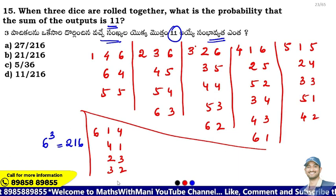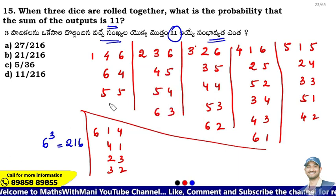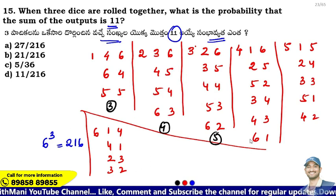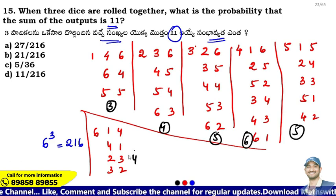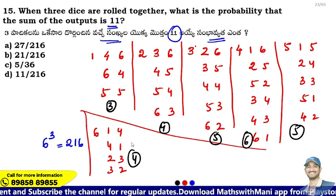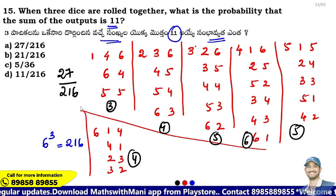So summarizing: number of possibilities is 3, then 4, then 5, then 6, then 5, then 4. Total: 3 + 4 + 5 + 10 + 15 + 4 = 27. So total 27 possibilities. Probability = 27 by 216, which is the correct answer.